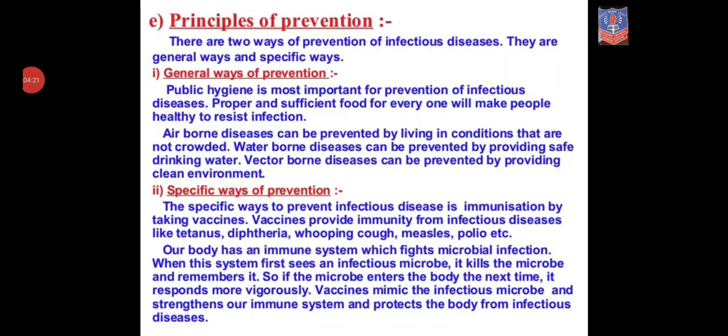Our next topic is the principles of prevention — how to prevent diseases before they occur. There are two ways of prevention of infectious disease: general ways and specific ways. The first is general ways of prevention. Public hygiene is most important: if every place is properly sanitized, with proper cleanliness and a proper environment, disease will not spread. Proper and sufficient food for everyone will make people healthy to resist infection.